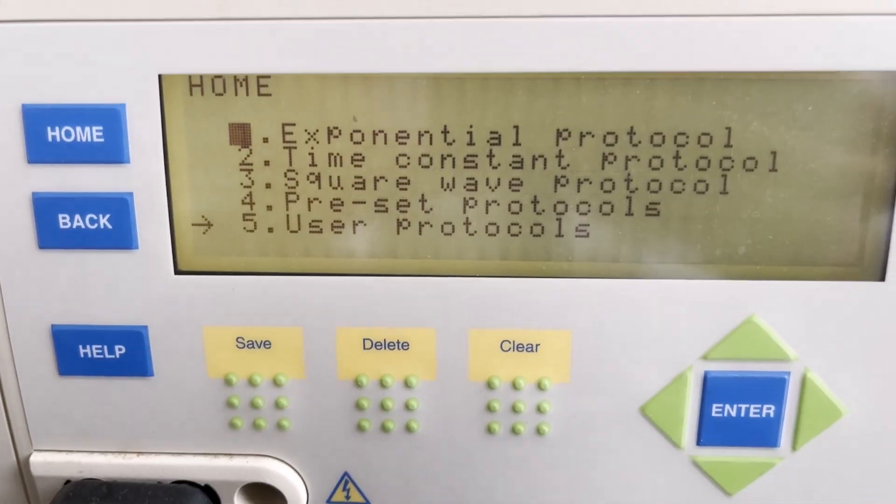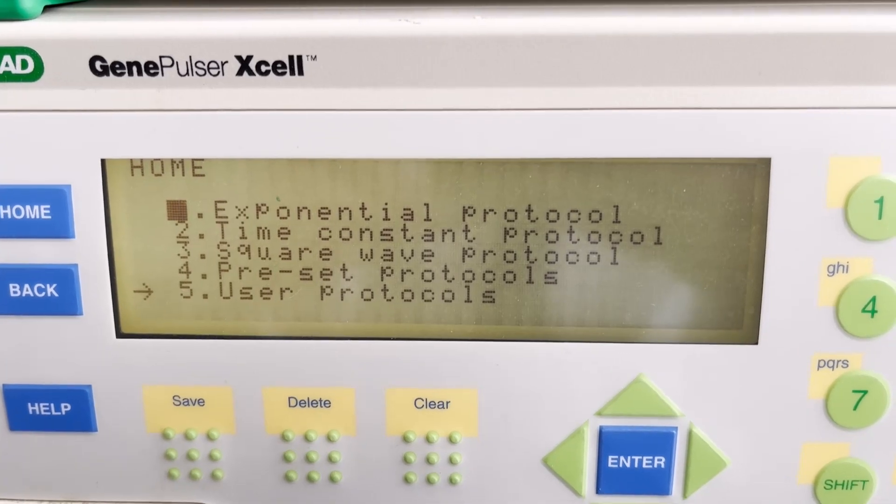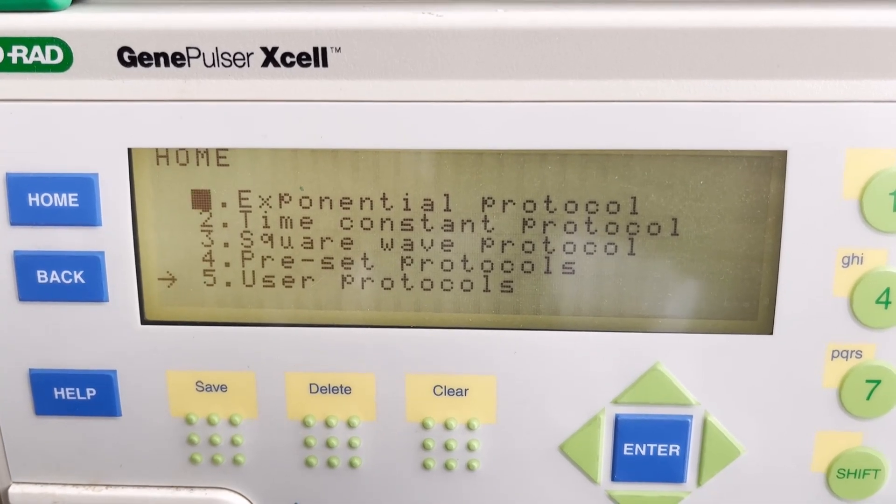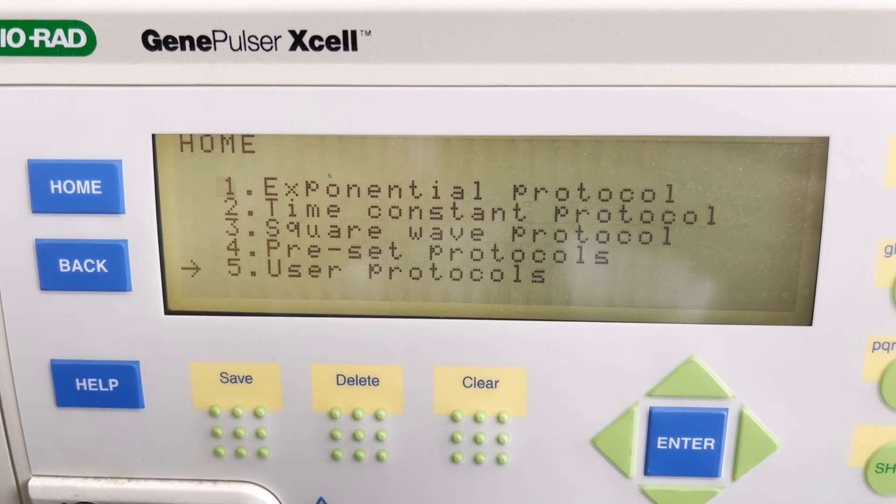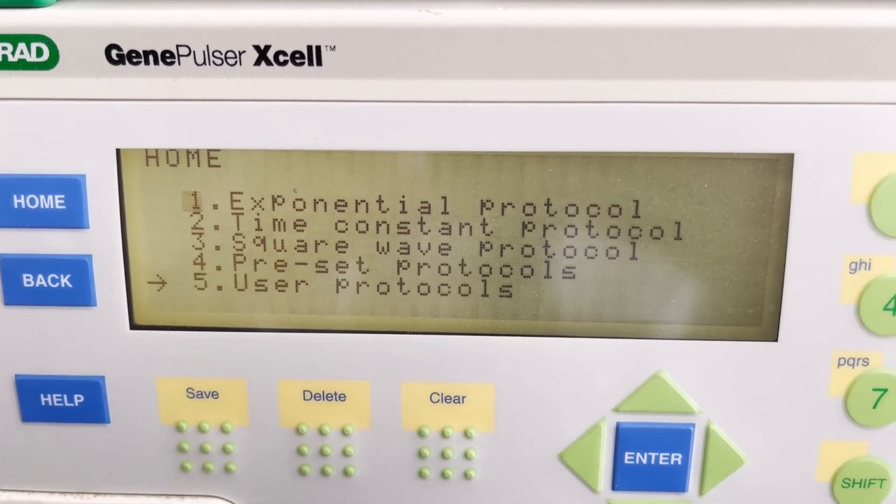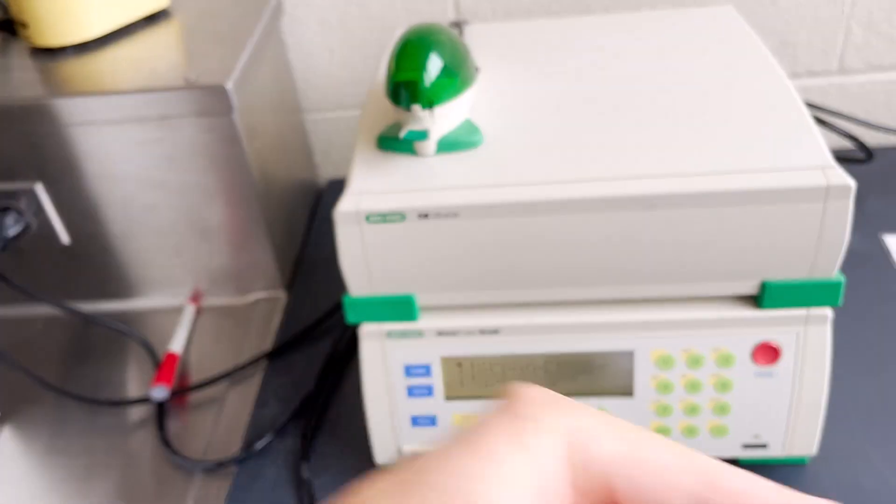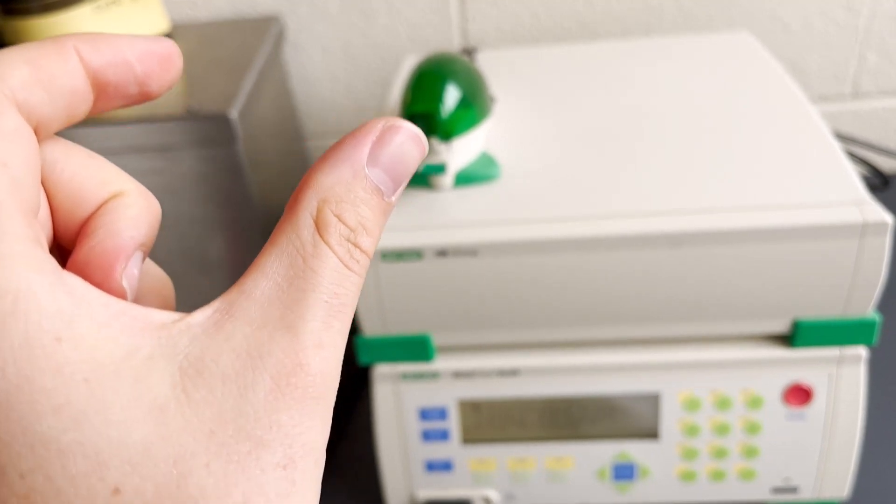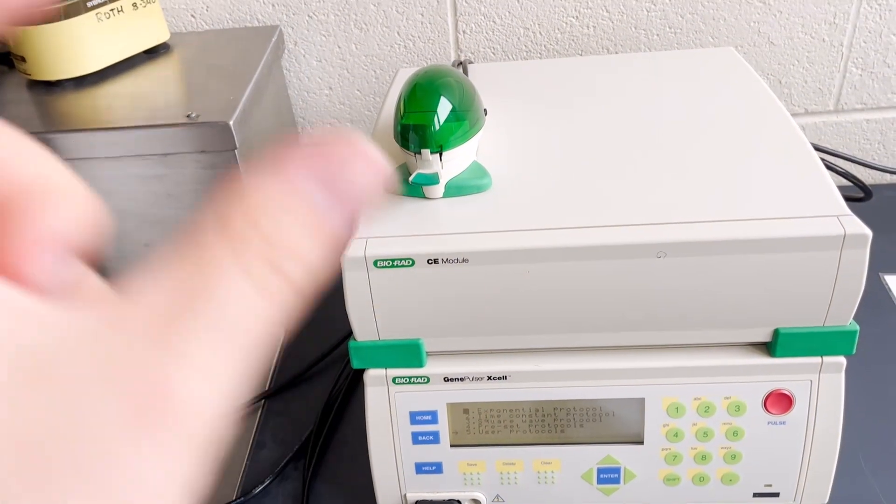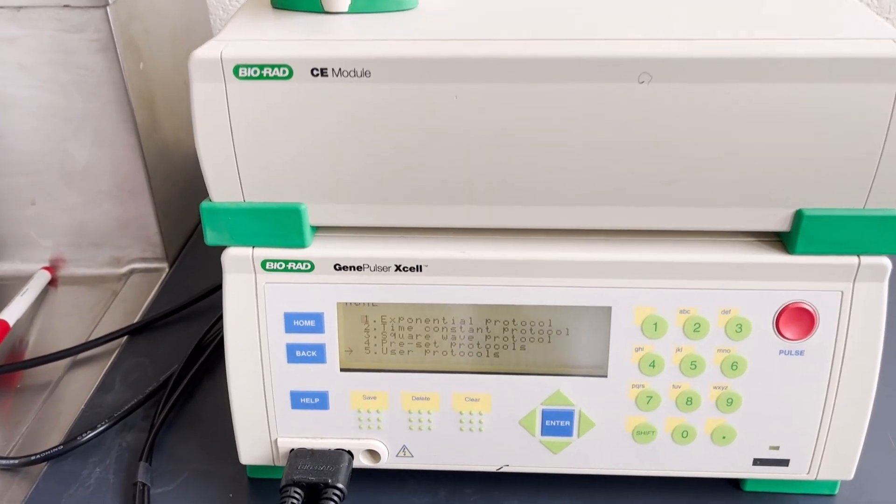There's also a time constant protocol which is similar to exponential but is set slightly differently based off of parameters of how the pulse is shaped. Square wave is kind of different. It truncates the pulse so that you don't have that exponential voltage drop off. It kind of just cuts it after the first part of the pulse and then it does successive pulses that are closer to your starting voltage without that decay.